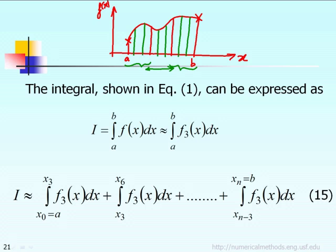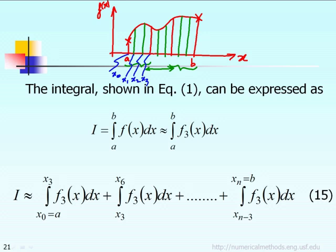You have to be careful when doing multiple segments: each segment has a different lower and upper limit. For example, in the first segment we label points x0, x1, x2, x3. The next segment uses x3, x4, x5, x6. And the third segment uses x6, x7, x8, x9.